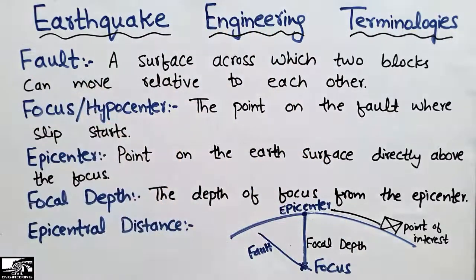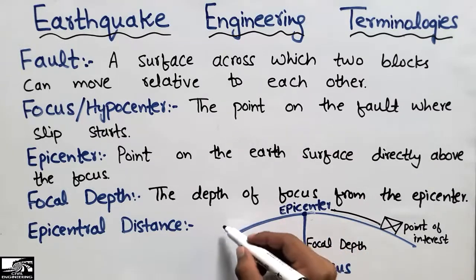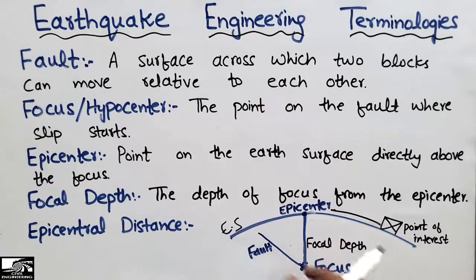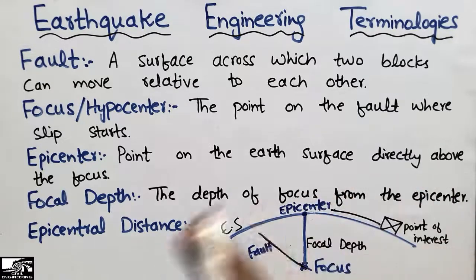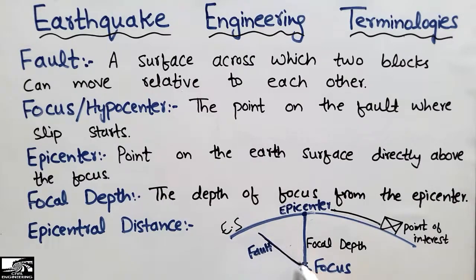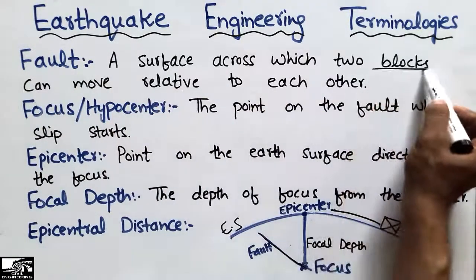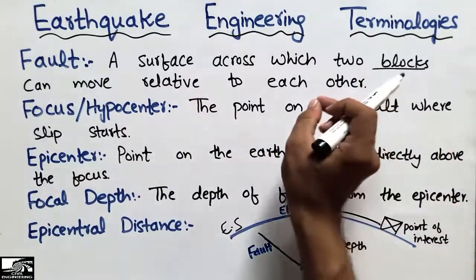In this earth diagram, you can see the earth surface above and the inside of the earth below. This is the fault line where the two blocks can move against each other. Due to the movement of these two rocks, the earthquake happens. So a fault is defined as a surface across which two earth blocks can move relative to each other.